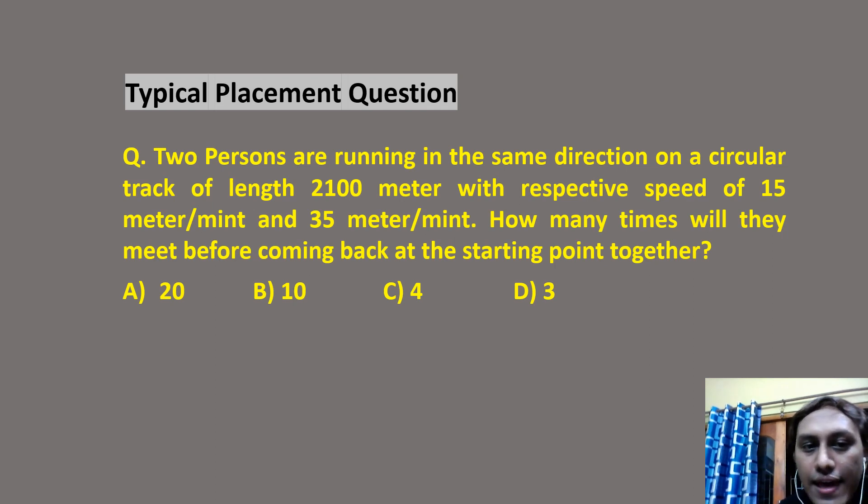The question is saying two persons are running in the same direction on a circular track of length 2100 meter with respective speed of 15 meter per minute and 35 meter per minute. The question is, how many times will they meet before coming back at the starting point?